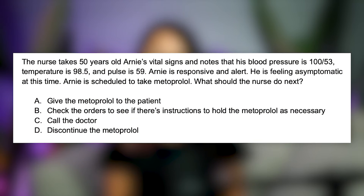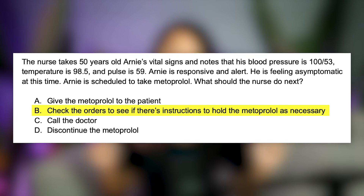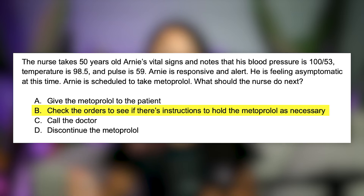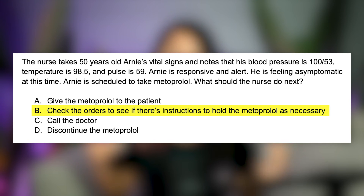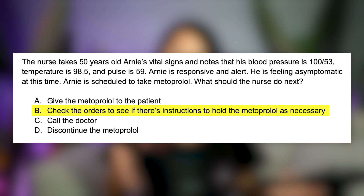The answer is B. You realize that Metoprolol is an antihypertensive medication. If the blood pressure is already low, you're going to eliminate A and not give this medication to the patient — Arnie's blood pressure would drop even further. You could call the doctor, but the doctor usually gives instructions with antihypertensive medications and will expect you to check the orders first. You should not discontinue the Metoprolol altogether either. In both the NCLEX world and the real world, there are usually instructions to hold medication if the patient's blood pressure is below the acceptable range. If there are no instructions, then yes, that's when you would call the doctor — but first, check for that.